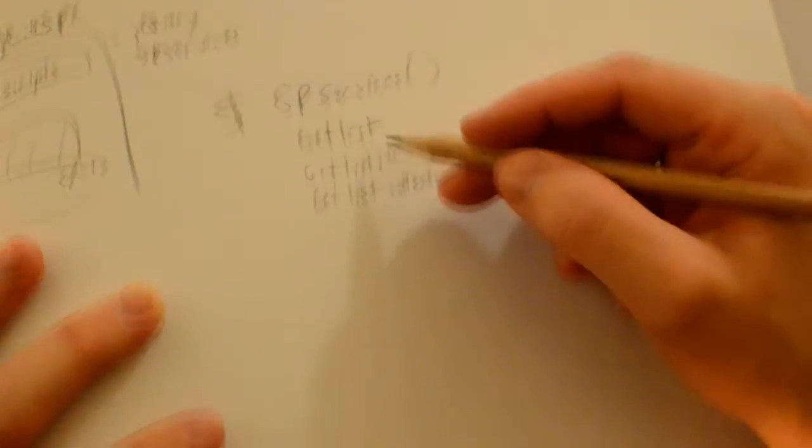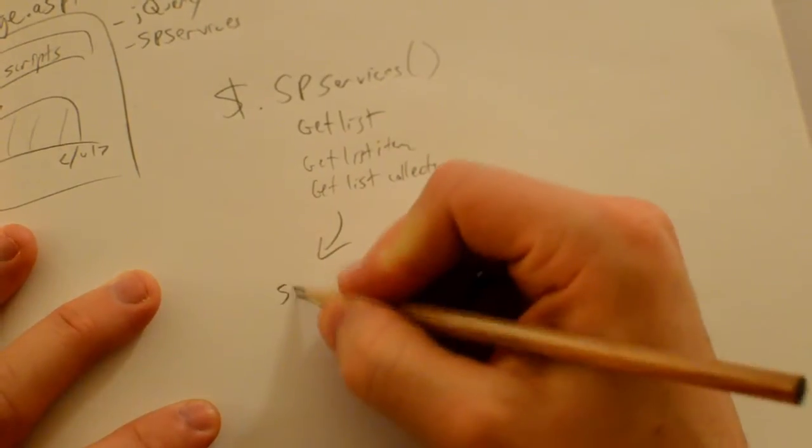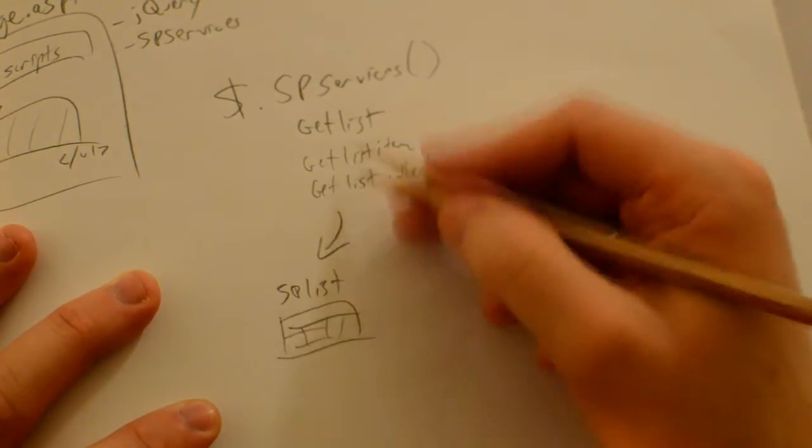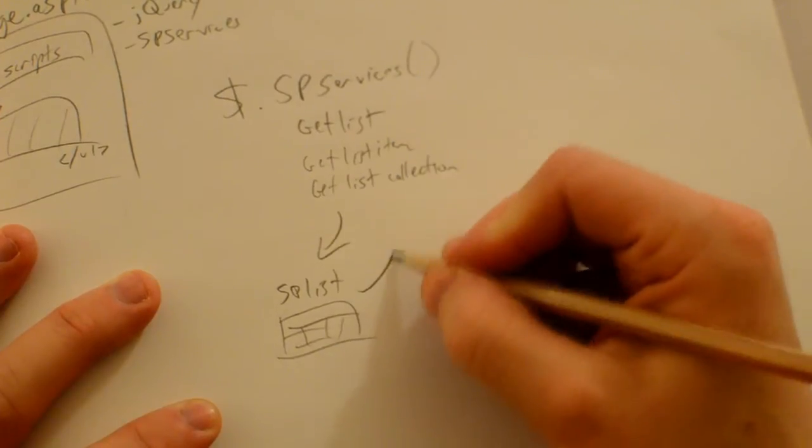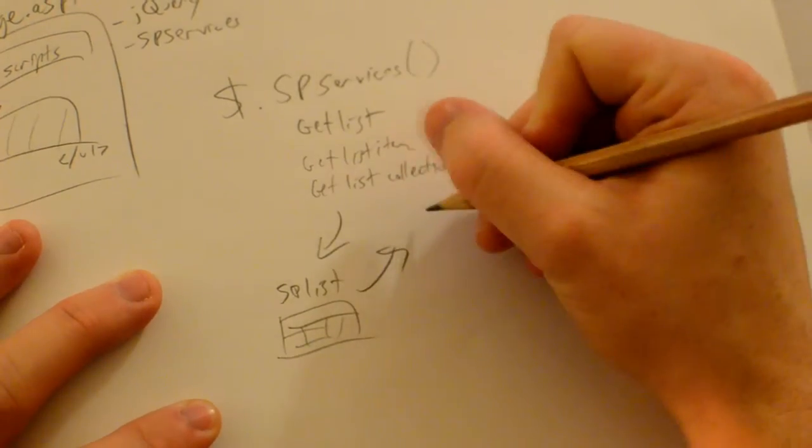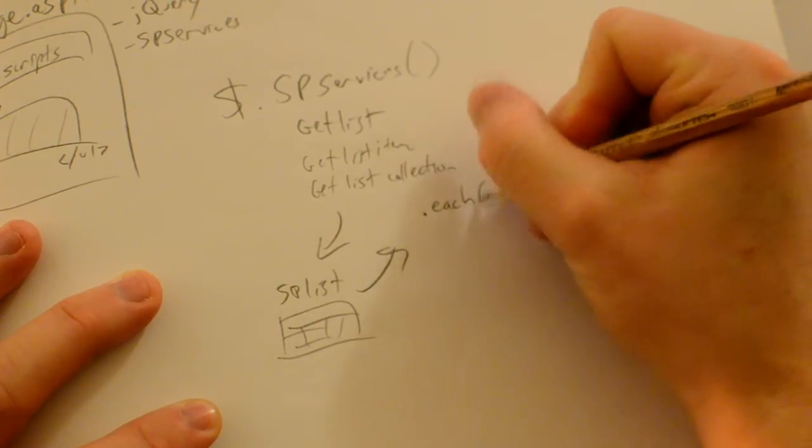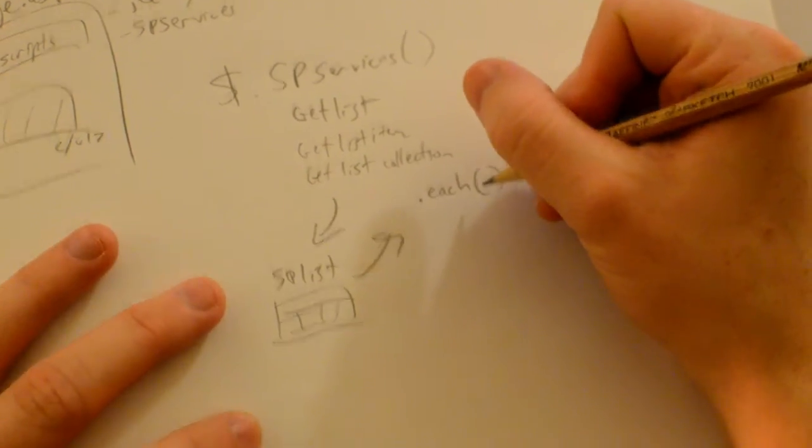So what these do is go to SharePoint, go to your SharePoint list, pull the columns and rows you need in your query that you set in SPServices, and send it back. The data you get back, we use jQuery to pull each row.